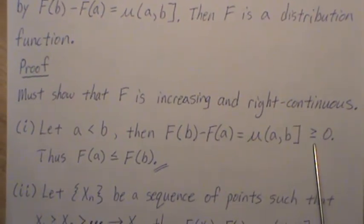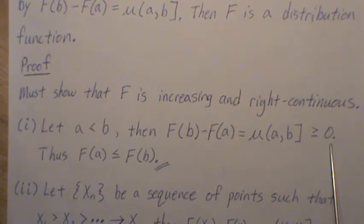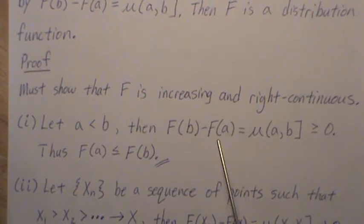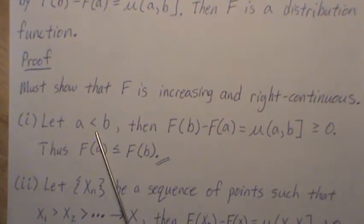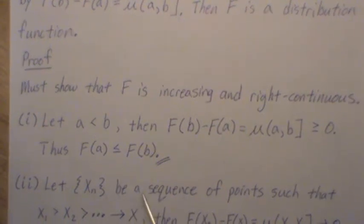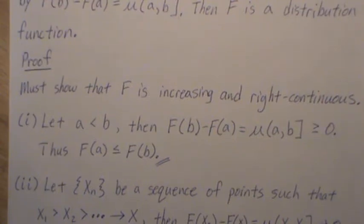Since the Lebesgue-Stieltjes measure is a measure, it means it's non-negative, so it's greater or equal to zero. That means if we subtract this to the other side, we get F(a) is less than or equal to F(b), and that's the definition of increasing. So F is increasing.